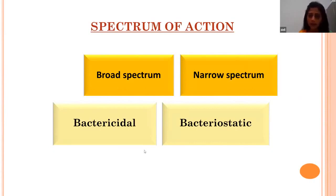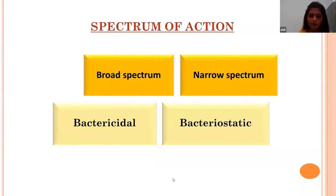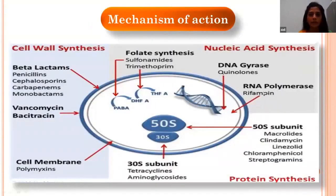We also classify antimicrobials based on whether they inhibit growth or kill microorganisms. Those that inhibit or suppress growth are called bacteriostatic — these include sulfonamides, tetracyclines, and macrolides. Those that kill microorganisms are called bactericidal — these include penicillins, cephalosporins, and tetracyclines.